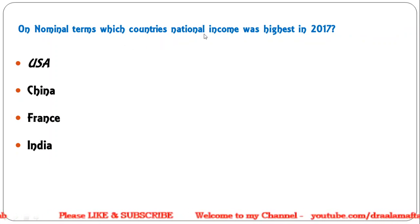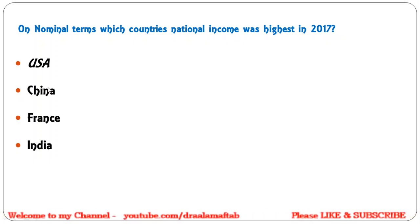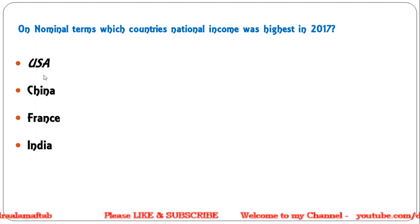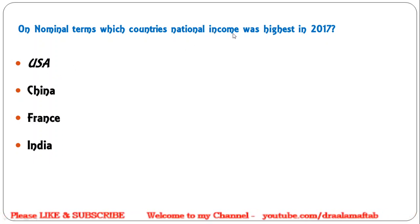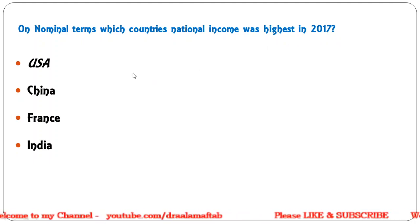Next question: on nominal terms, which country's national income was highest in 2017? Options are USA, China, France, or India. The correct answer is USA — on nominal terms, USA's national income was highest in 2017, whereas China was second.